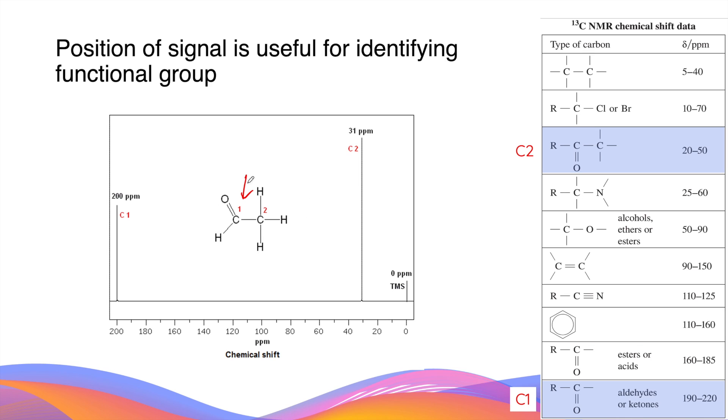For example, the carbonyl carbon in a molecule of aldehyde has a very large chemical shift compared to the rest of the signals. The actual data for chemical shift can be found in the data sheet. This concludes the video on carbon-13 NMR.